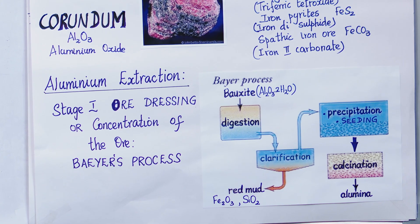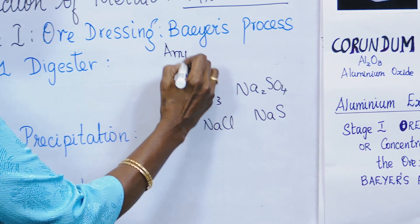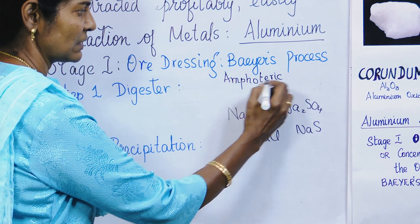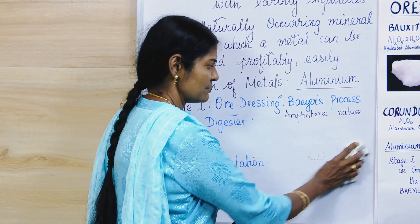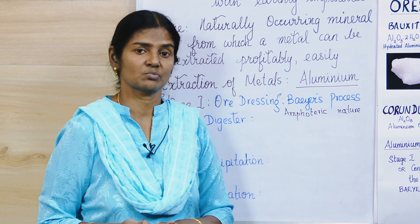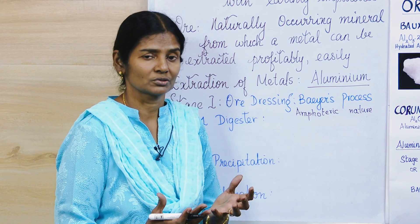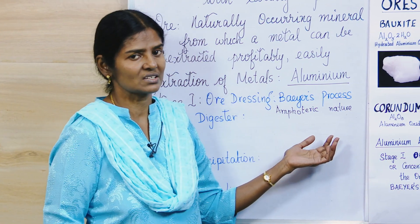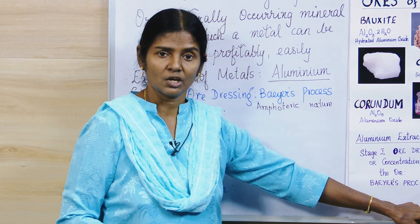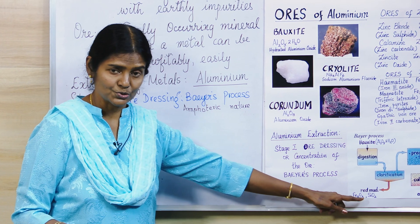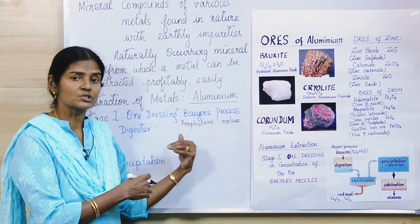The principle behind Bayer's process is the amphoteric nature of aluminium. An amphoteric metal is something that can react with both acid as well as base to give salt and water — like an amphibian that lives in both land and water. The impurities present in bauxite are iron(II) oxide, titanium oxide, and silica (SiO₂). These impurities will not react with a base, but aluminium being amphoteric, it would react with a base — that is the principle behind this process.